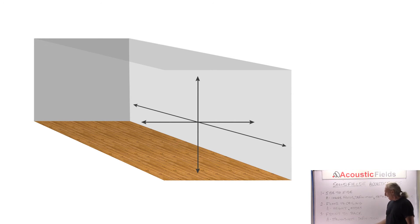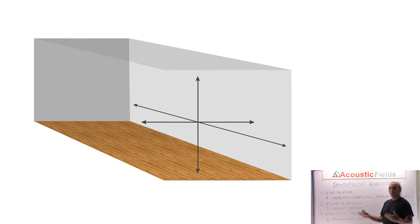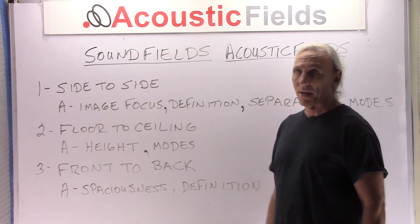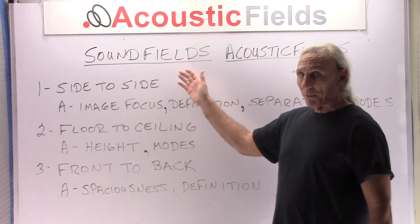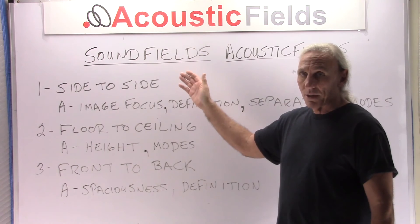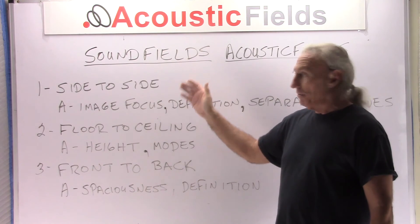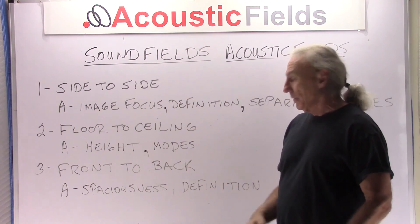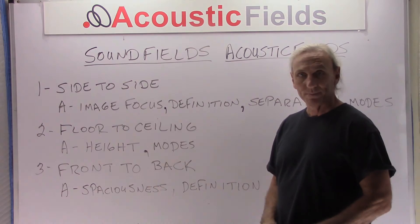So front to back gives you spaciousness and definition. Most of you don't have the luxury of moving your rear wall forward, but we do in our studio because we have portable units — try it sometime and you'll get the idea. So we have three sound fields in our room to be focused on: side-to-side energy, floor to ceiling, and front to back.